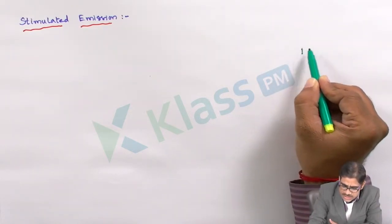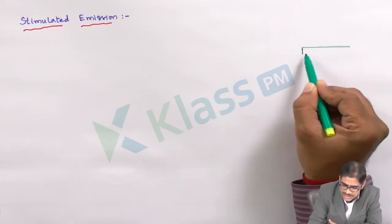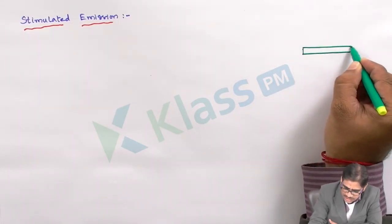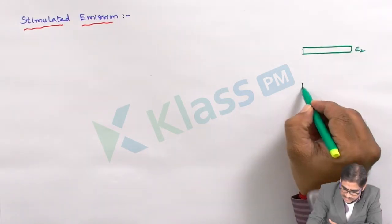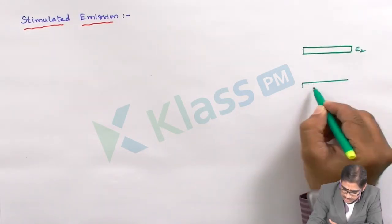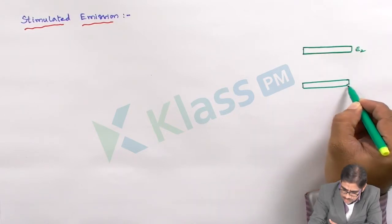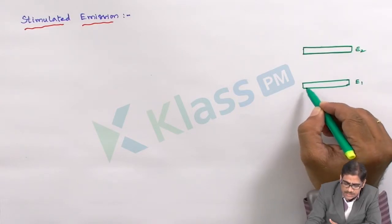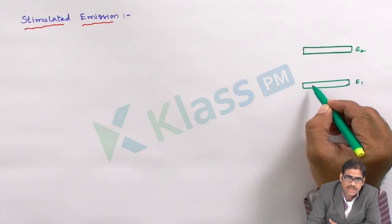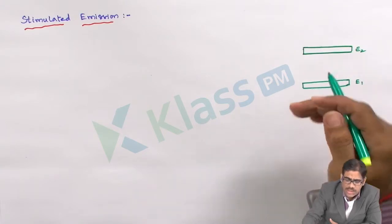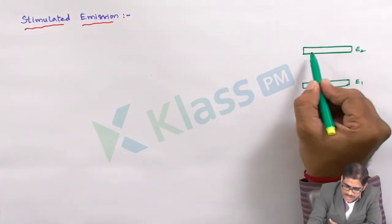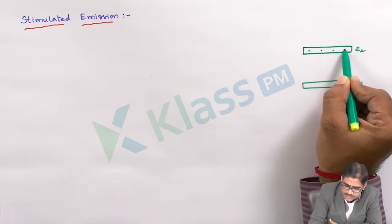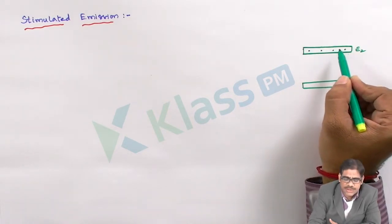What we said in the earlier case was, there exist two energy levels — energy level E2 and energy level E1. In these states, we said that the atoms will absorb the amount of radiation E equal to hν, and they move on to the higher energy state. The atoms are already there in the energy state E2 after the stimulated absorption.